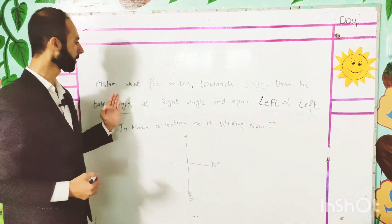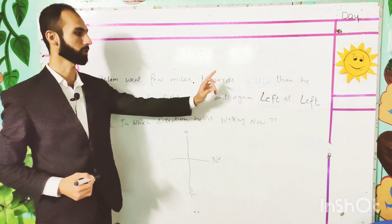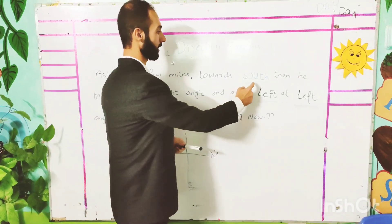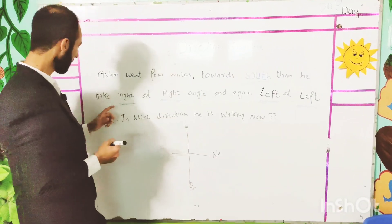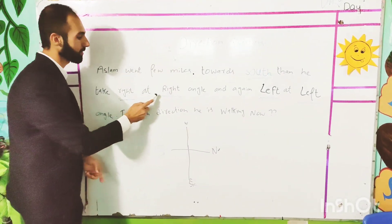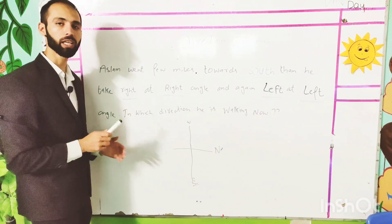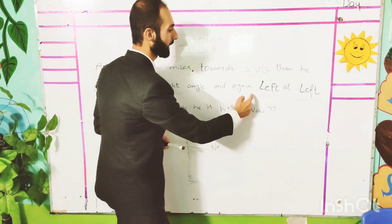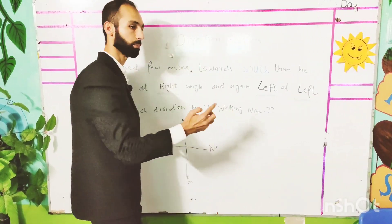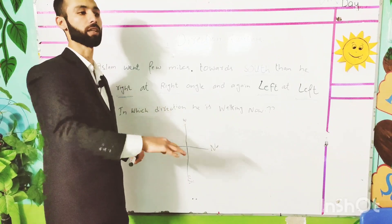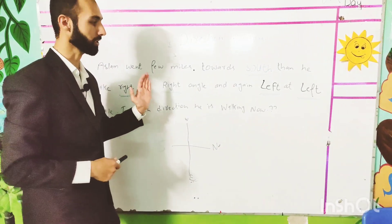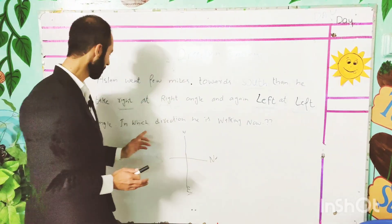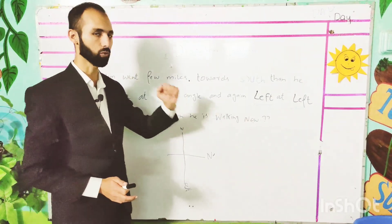Question number 2: Aslam went few miles towards south. What was it before? Towards north. Now he is going south. Then he took right at right angle — he moved. And again, left at left angle. So first he took right, then left. In which direction is he walking now?